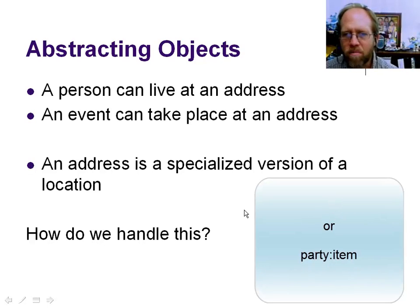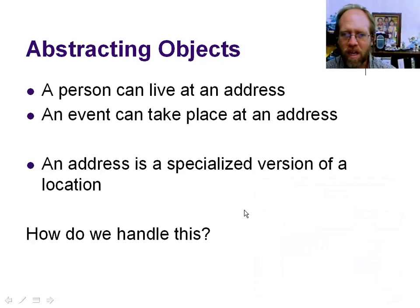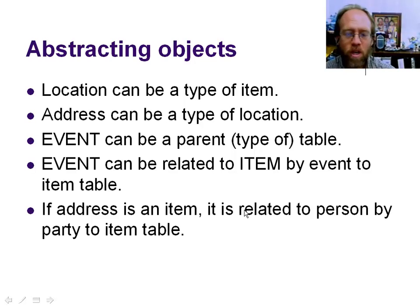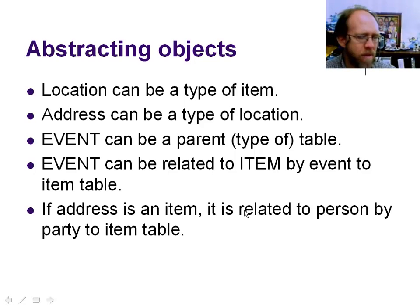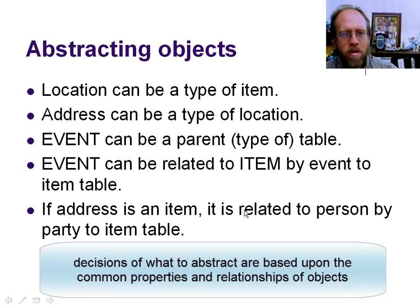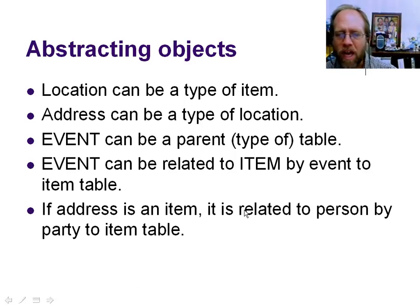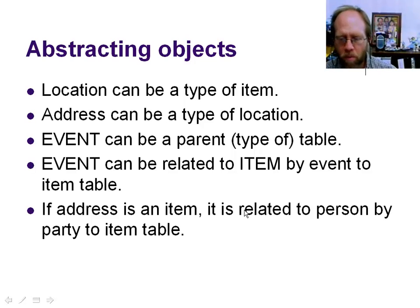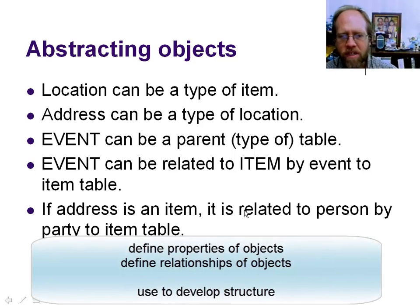Let's go through another example: location and address. An address is a type of location, but locations can be more specific. A location could potentially be an item, but you have to make that decision not just based on logic, but on whether the fields you need to track with locations abstract neatly with items, and whether the relationships associated with locations match those you would see with items. You use the information requirements of your design to determine what level of abstraction is appropriate.